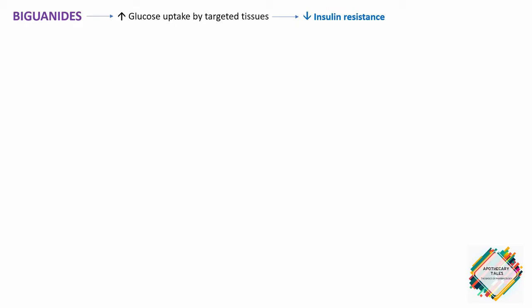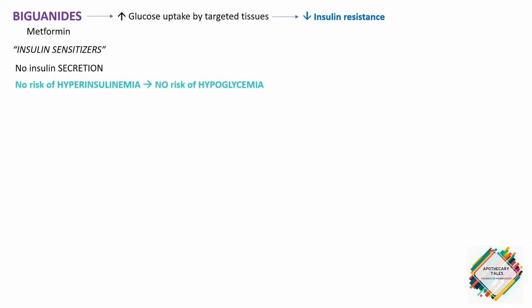The example of the biguanide is metformin. Remember, biguanides are just insulin sensitizers; therefore they do not cause or produce insulin secretion. Hence it does not cause hyperinsulinemia, and as a result the chance of causing hypoglycemia is actually very less.